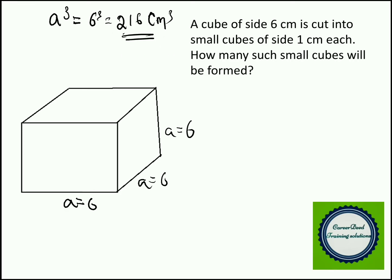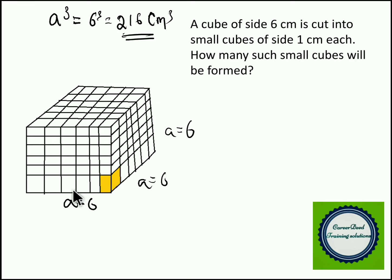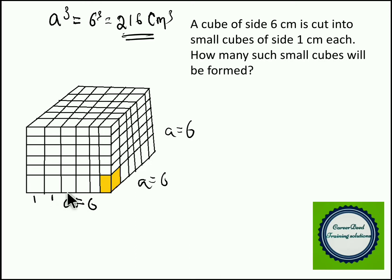Now how do you cut? If the total side is 6 centimeters, on the length you have to cut 5 times, on the breadth you have to cut 5 times, and on the height you have to cut 5 times. If you cut 5 times at 1 centimeter intervals, you totally get 6 pieces of 1 centimeter each — 1, 1, 1, 1, 1 and 1, totaling 6 centimeters.